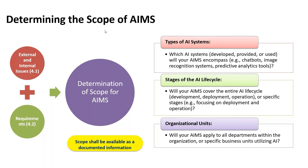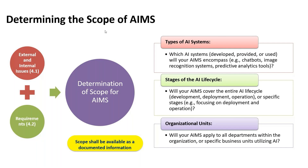AI policies from other organizations are written with a particular context in mind. The scope of an AI system should be defined around things we want to automate, streamline, or where manual operations can be handed off to an automated system. That combination will define the scope of AI systems for any organization.